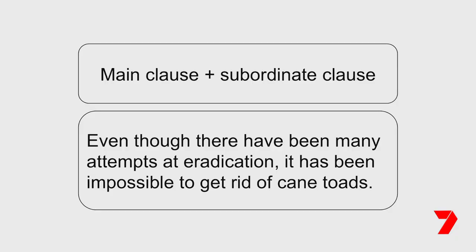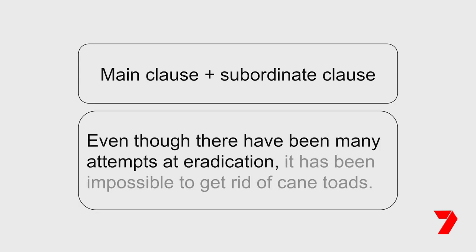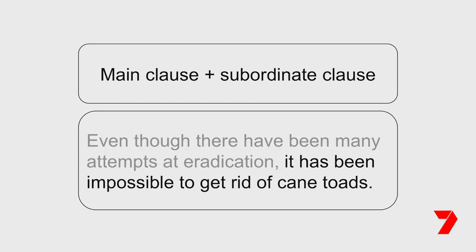An example of a complex sentence is: even though there have been many attempts at eradication, it has been impossible to get rid of cane toads. The main clause in this sentence — it has been impossible to get rid of cane toads — contains a subject and a verb and makes sense on its own. The subordinate clause — even though there have been many attempts at eradication — also contains a subject and a verb, but it does not make sense on its own. To understand what this means, the reader needs the main clause.